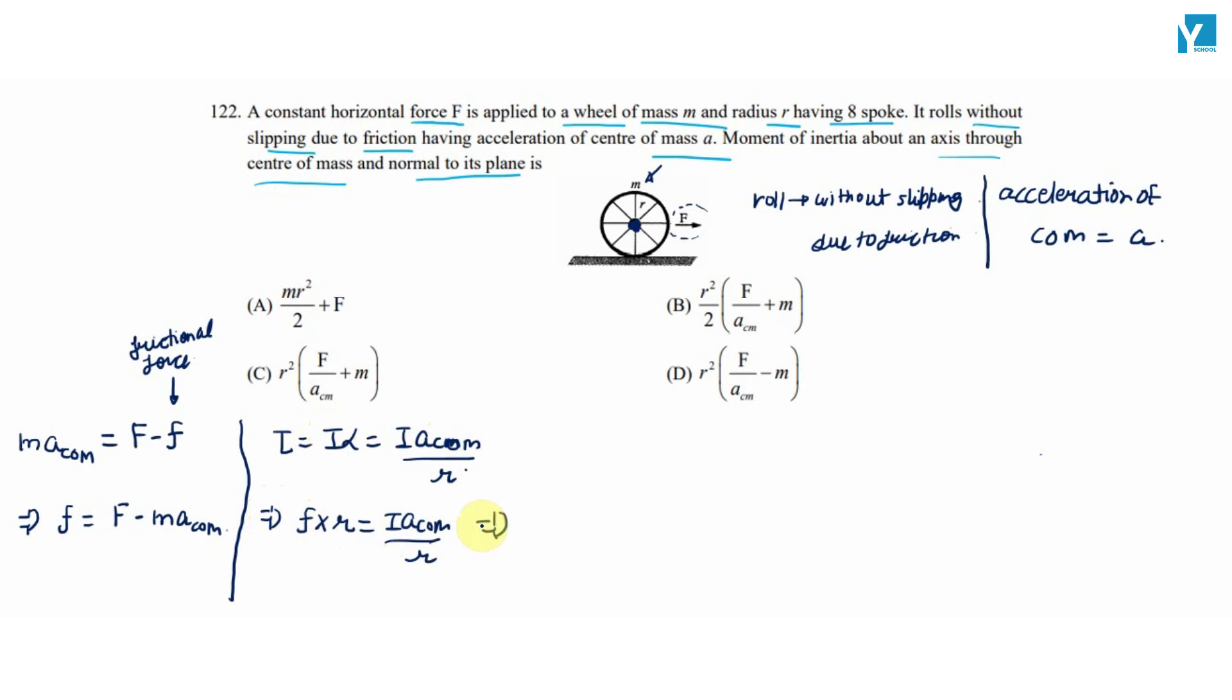Force of friction on substituting equals F minus mass into acceleration of center of mass. This equals I times acceleration of center of mass divided by R. On rearranging the terms, we get I equals R squared times F divided by acceleration of center of mass minus M.